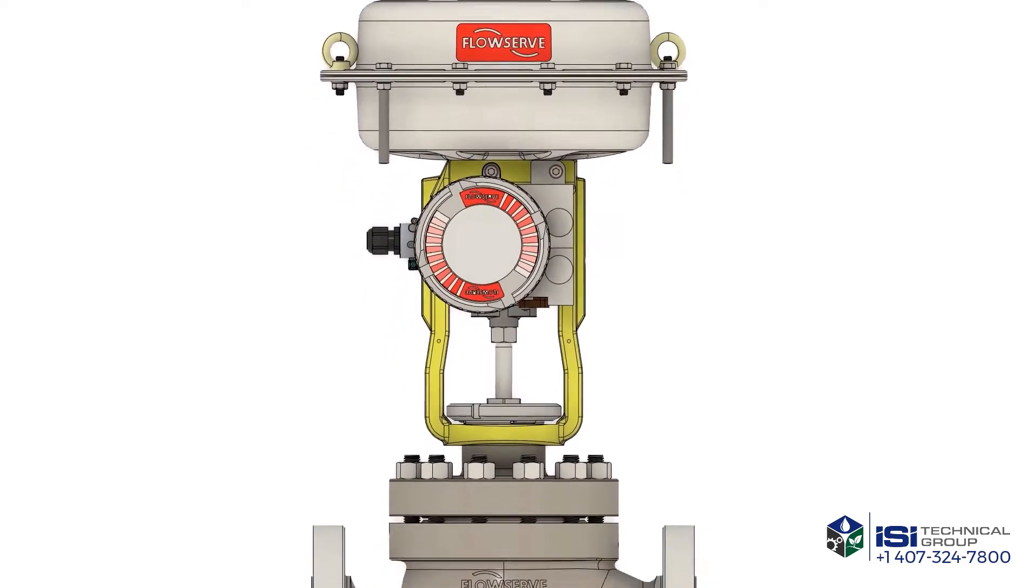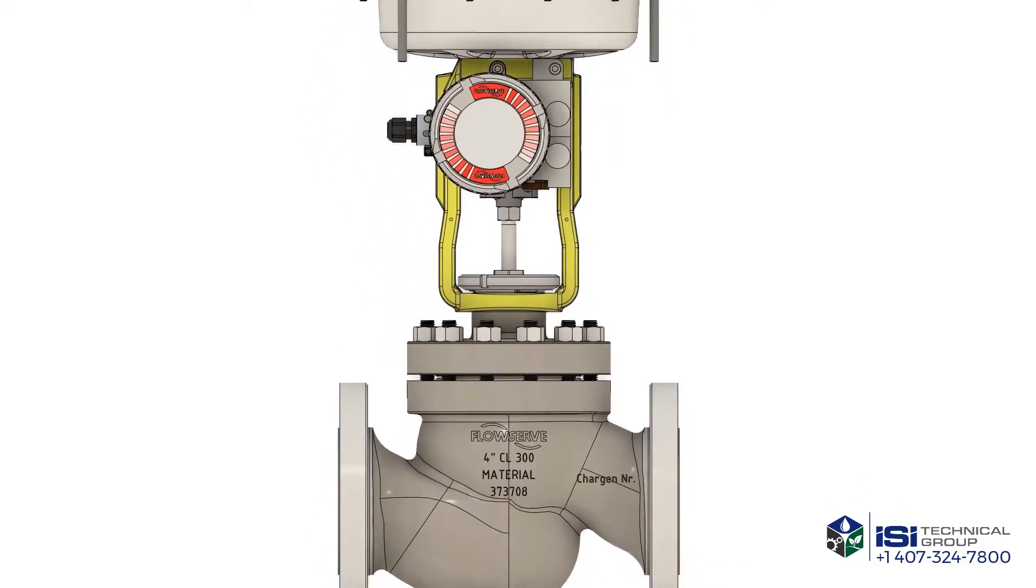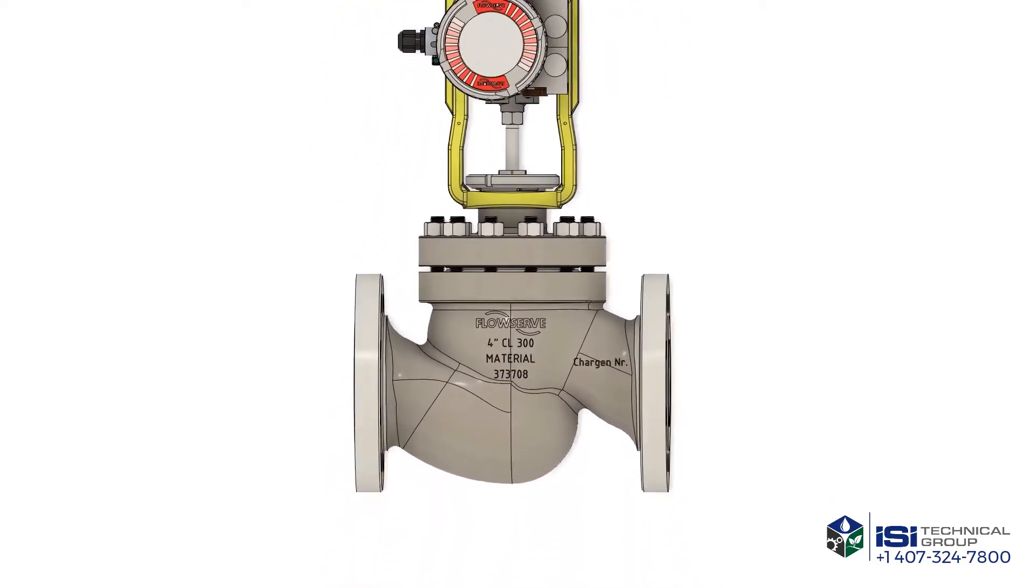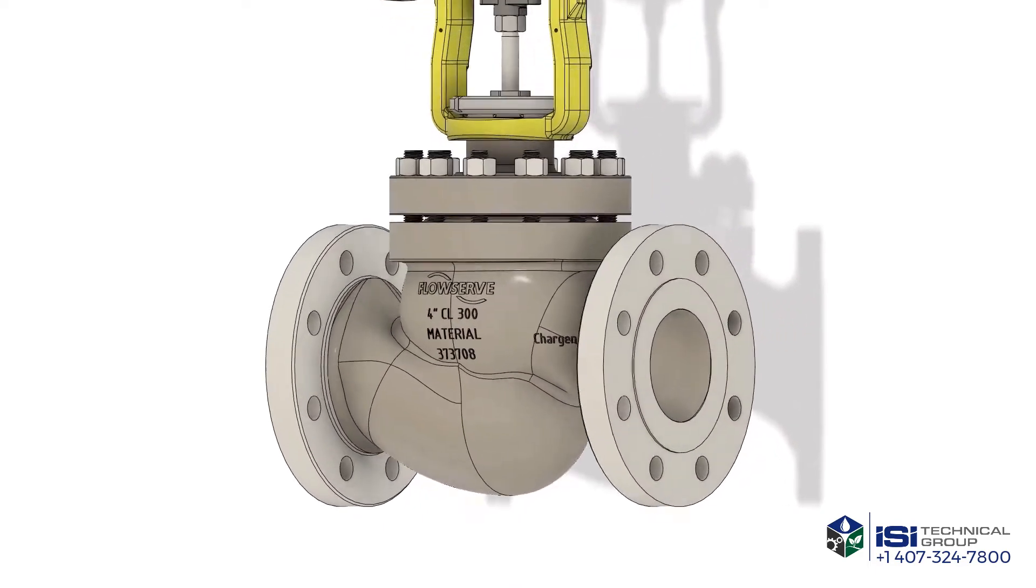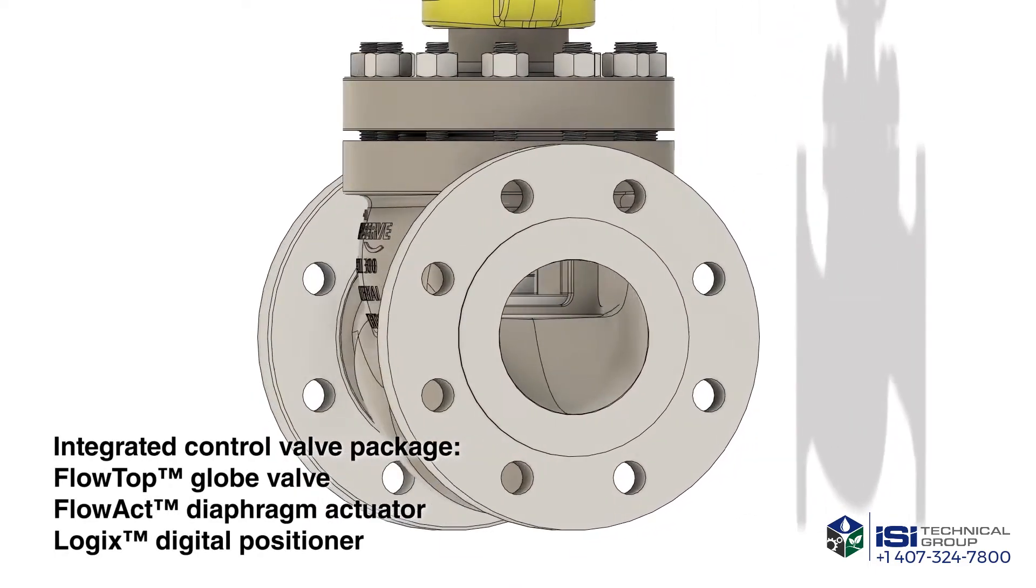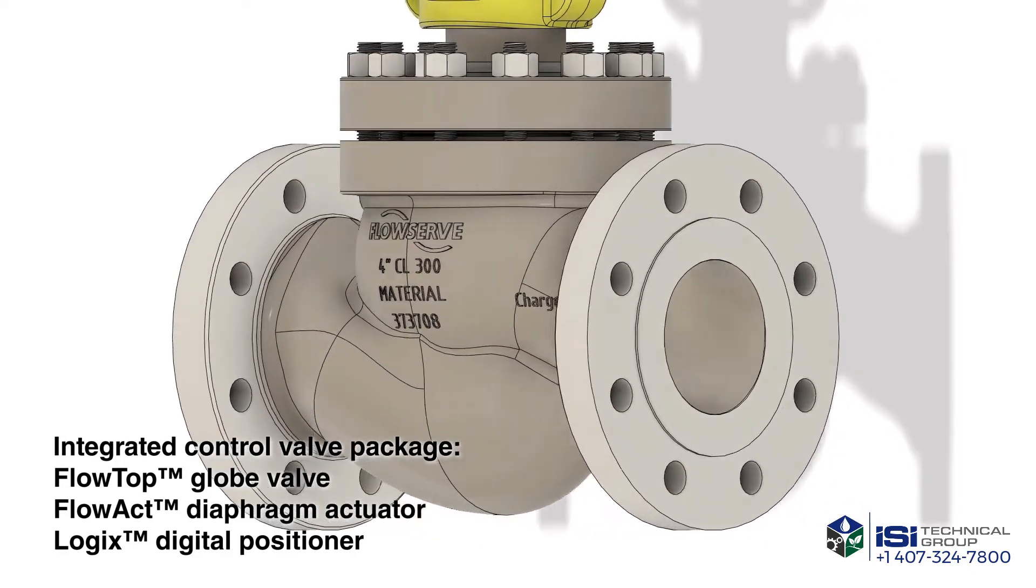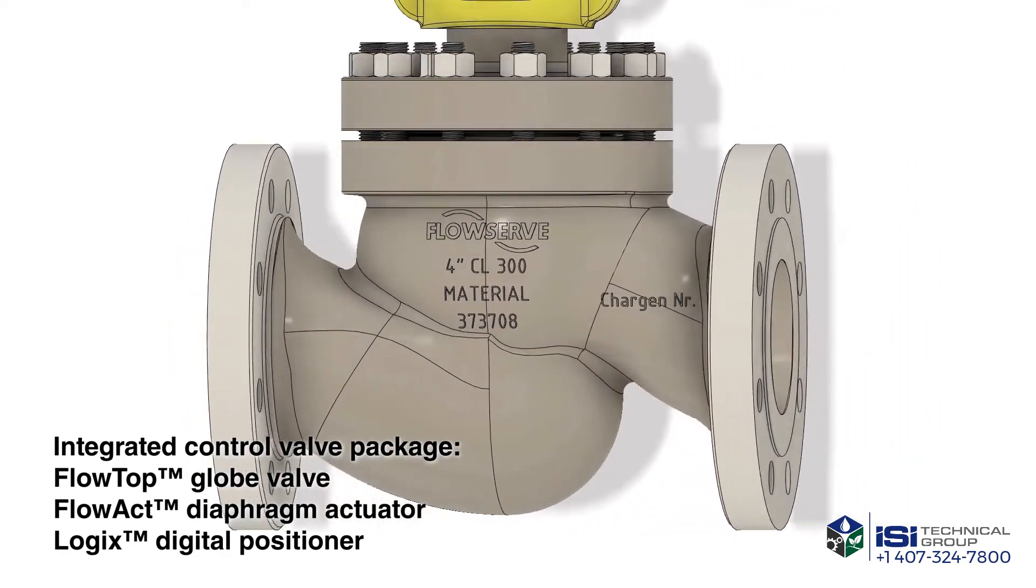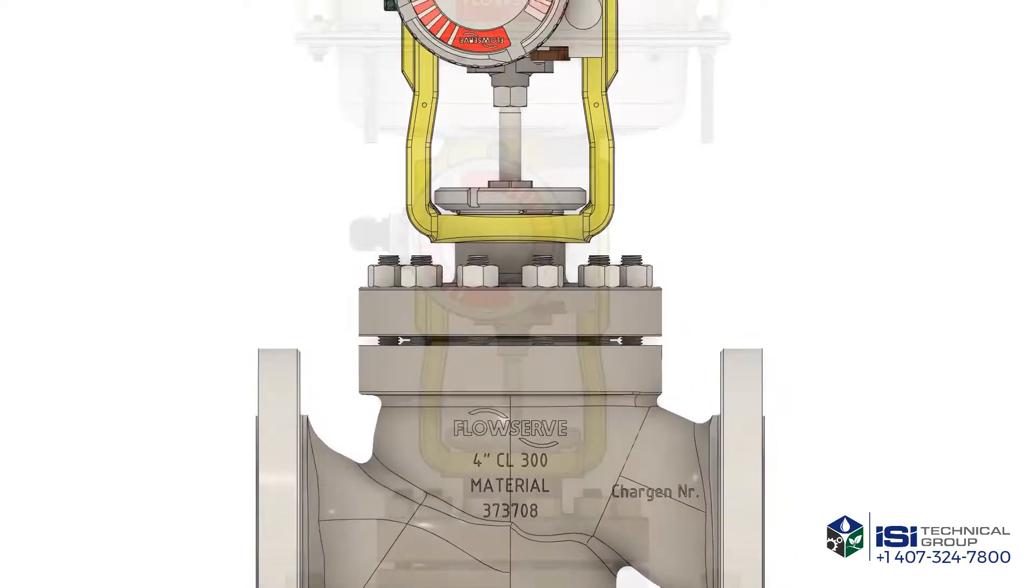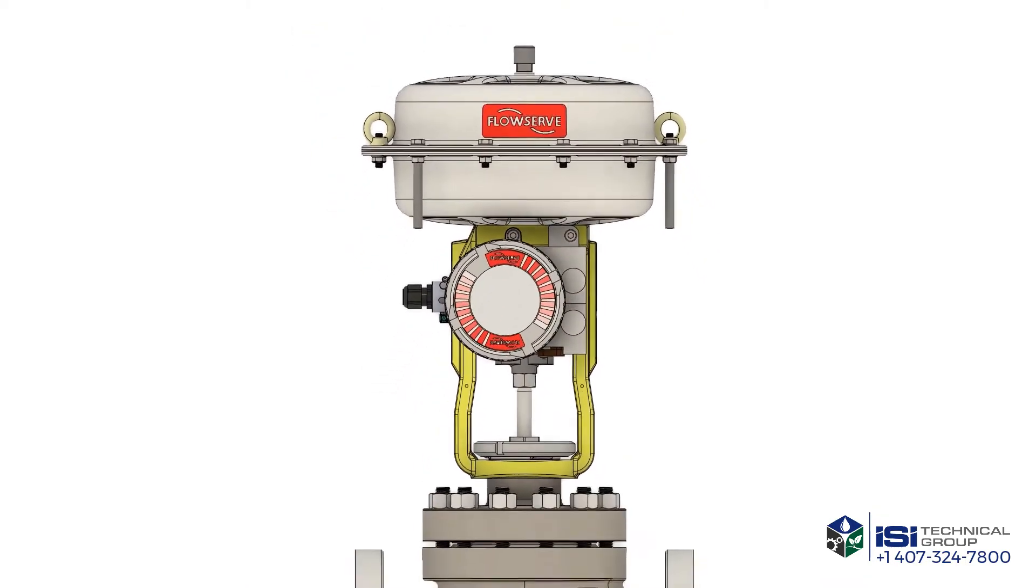Available in globe style design with integral flanges designed to B1634, it is available in sizes from half inch to six inch, class 150 to 300, with a diaphragm actuator. The positioner can be mounted directly to the valve.